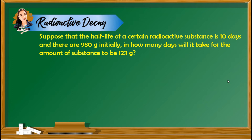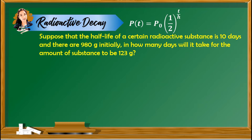Let us now have the second application: radioactive decay. Suppose that the half-life of a certain radioactive substance is 10 days and there are 980 grams initially. How many days will it take for the amount of substance to be 123 grams? In radioactive decay, we follow the formula P(T), the future amount of substance at time T, equals P-sub-zero, the initial amount, times one-half raised to T over H, where H is the half-life.